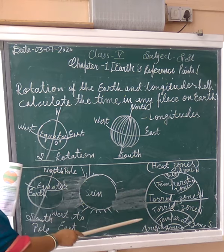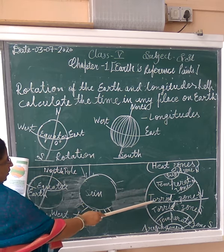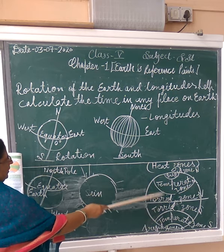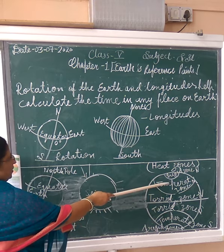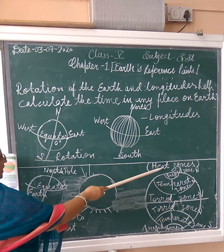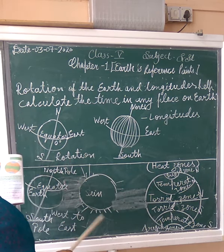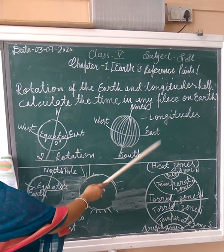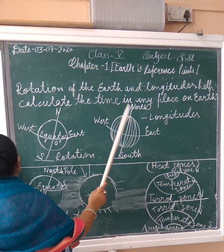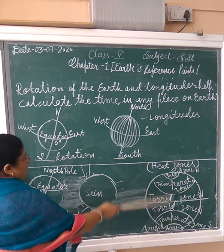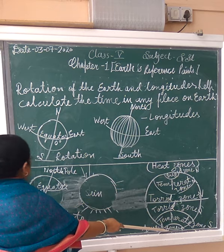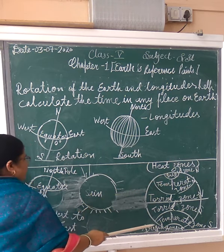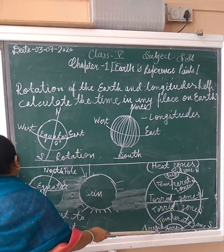Then there is the Temperate Zone, which is on both the north and south sides. The Temperate Zone is where the sun shines only for 6 months in a year. It belongs to both sides — north and south. From the Arctic Circle to the North Pole, and from the Antarctic Circle to the South Pole, these are the frigid zones — the coldest zones.